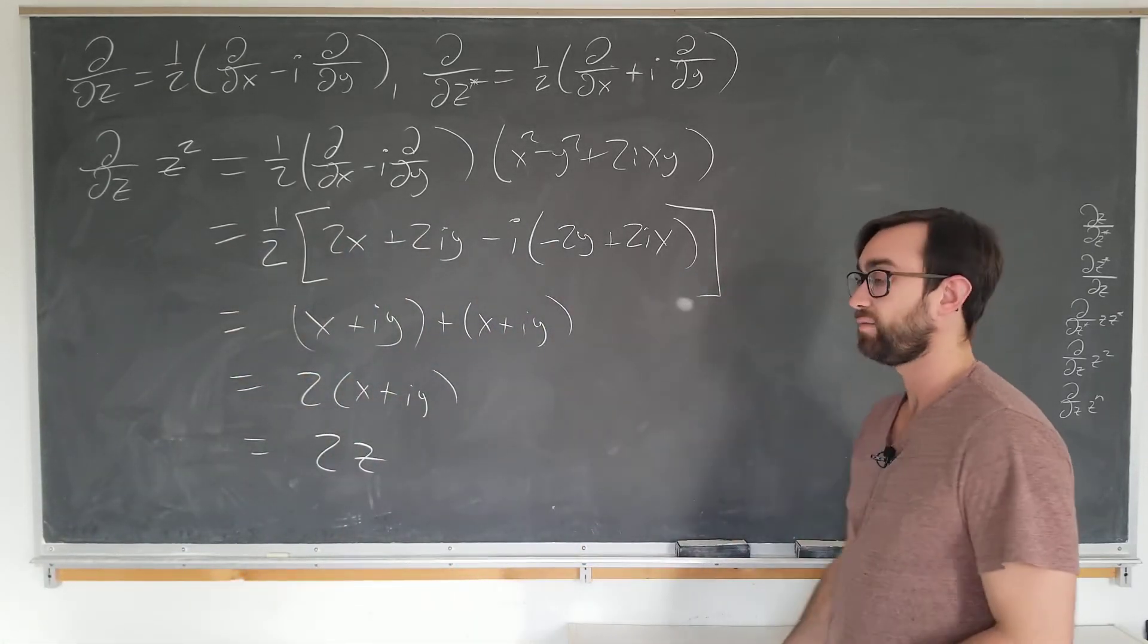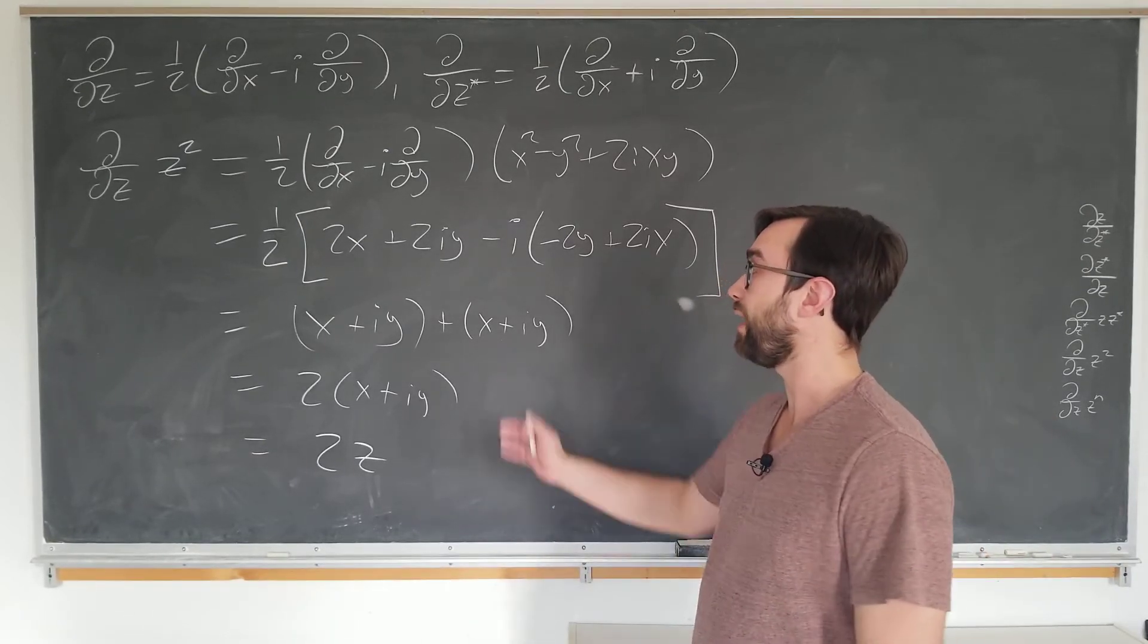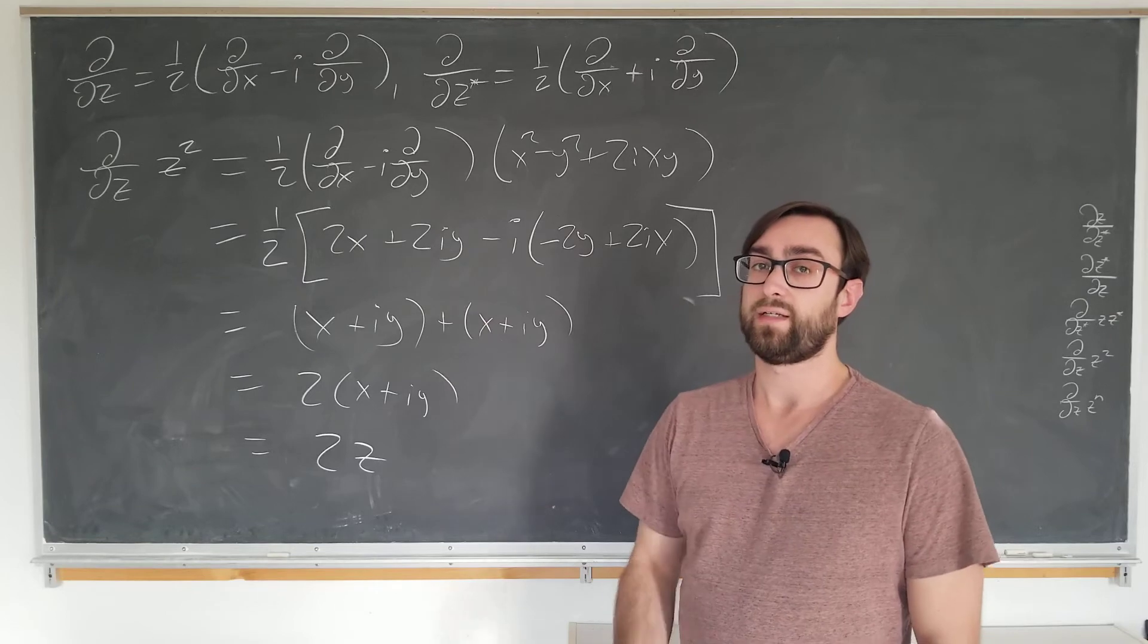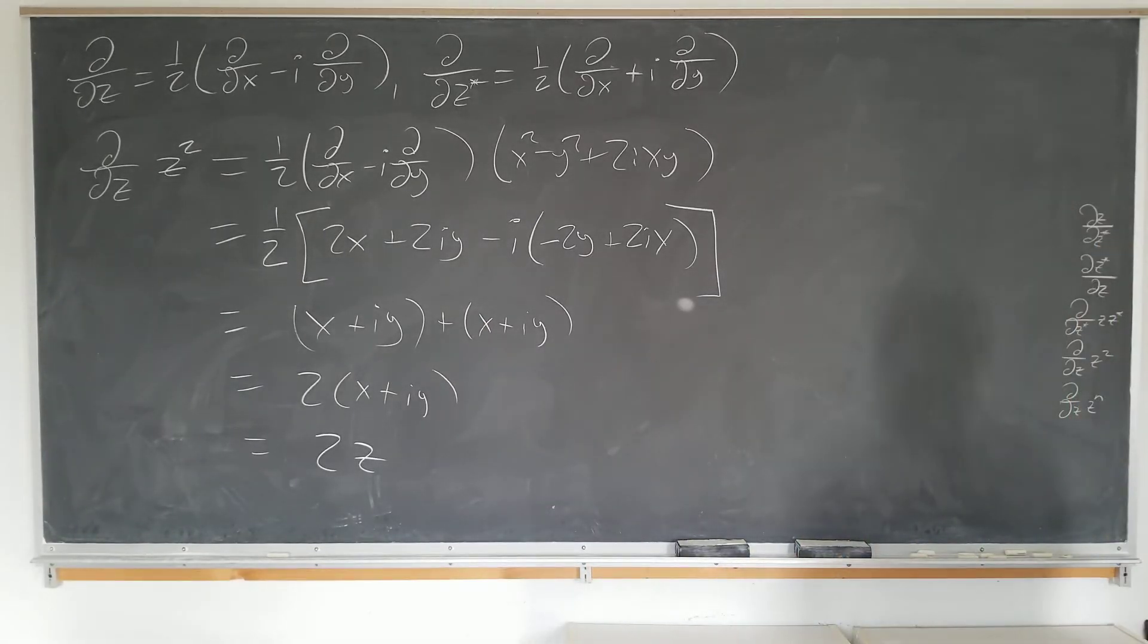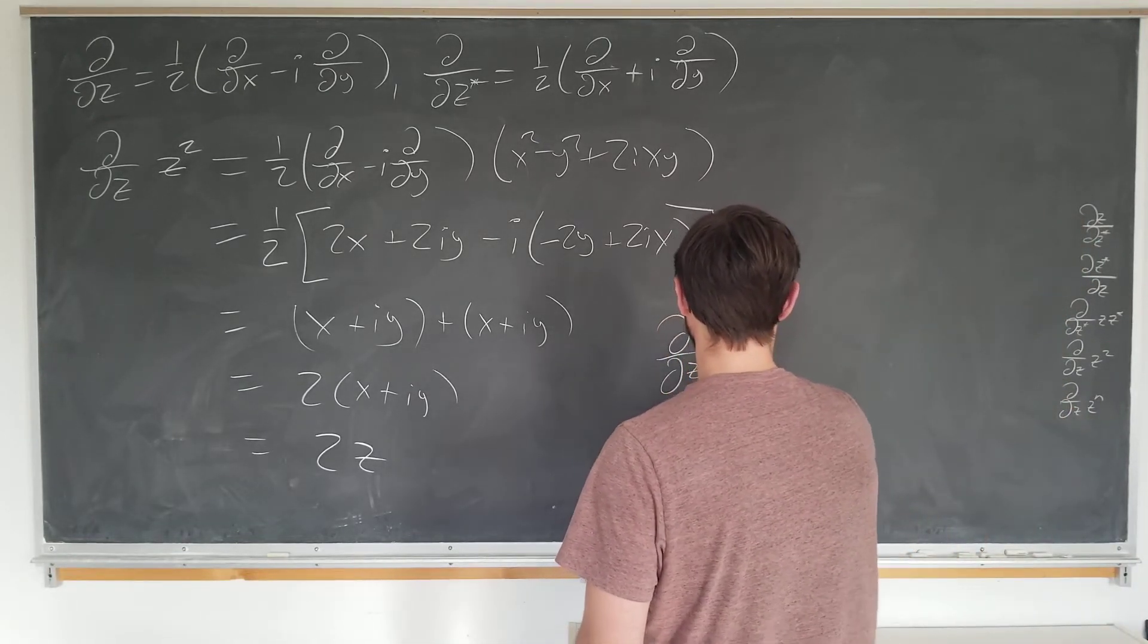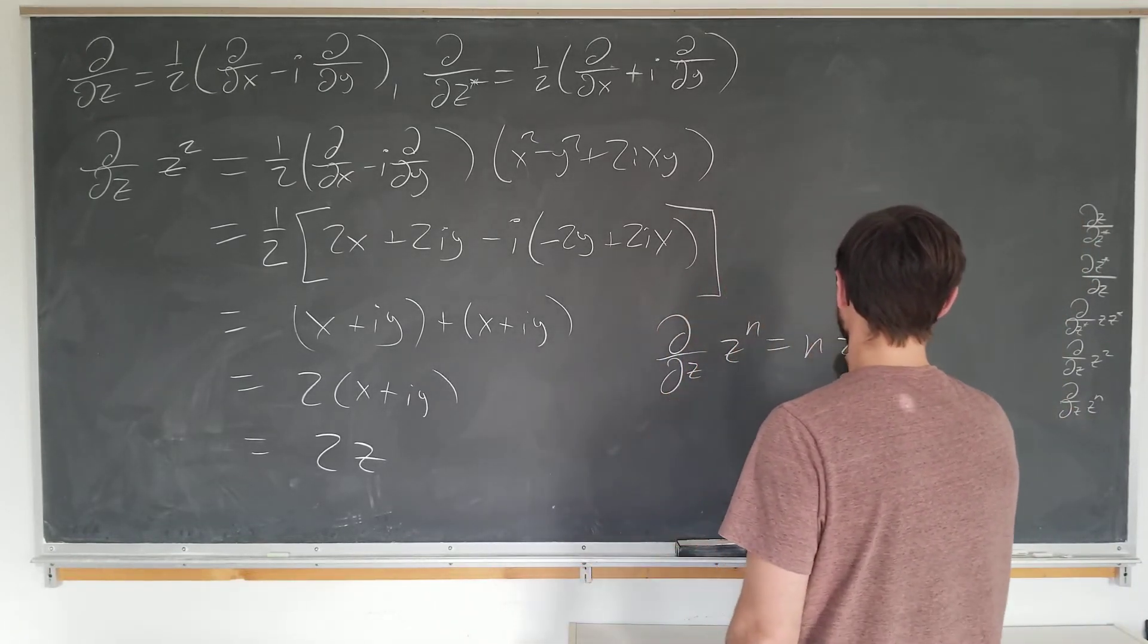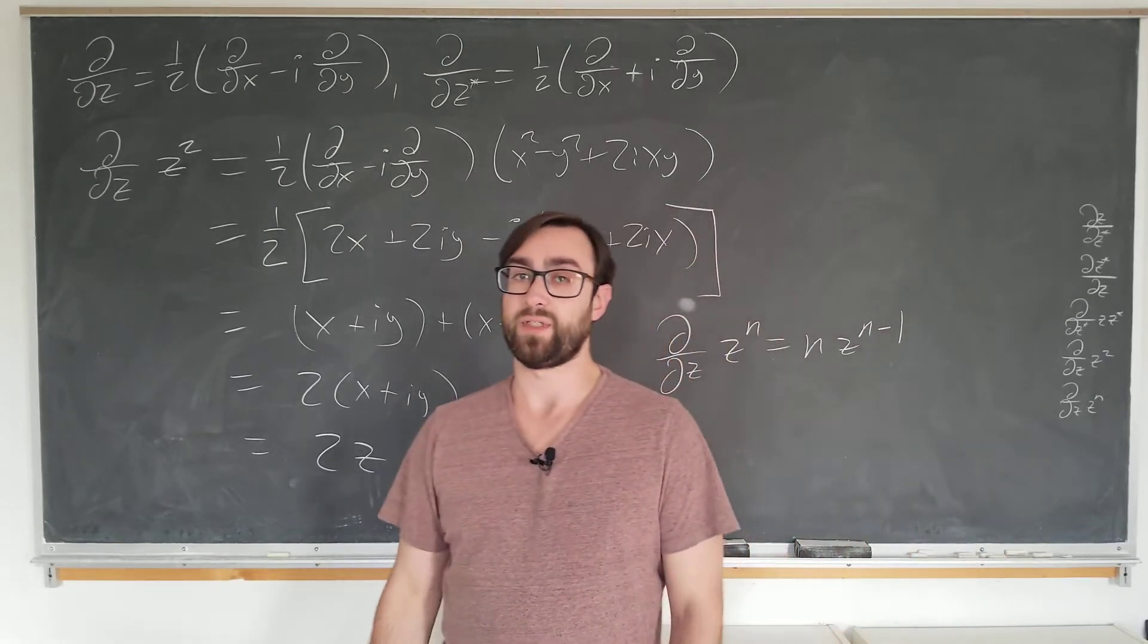In terms of the monomial or the power rule, it holds in the case of n equals two. We would like to show that it holds in the general case. So we want to show that d by dz of z to the n is equal to n z to the n minus one.